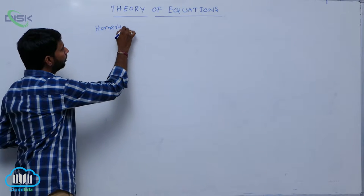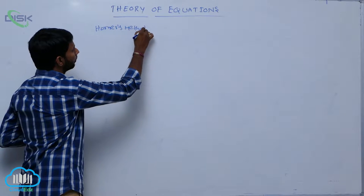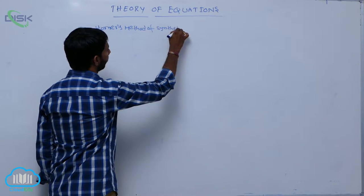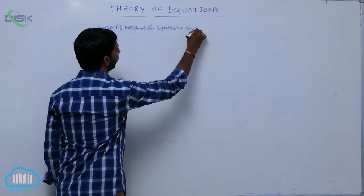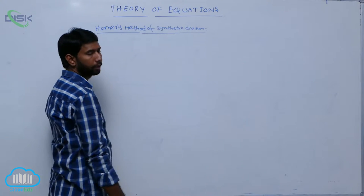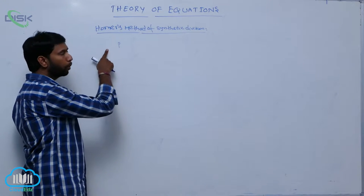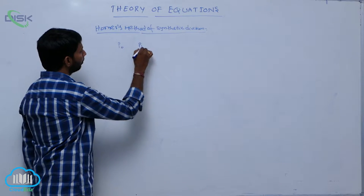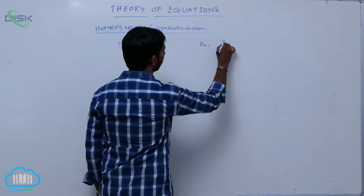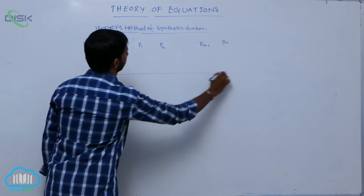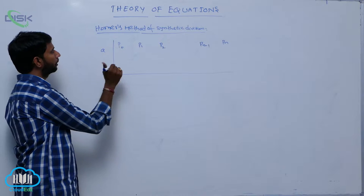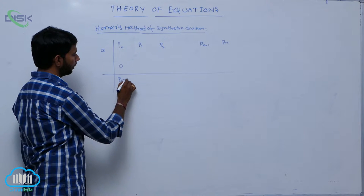Horner's method of synthetic division. Write the coefficients of a polynomial p₀, p₁, p₂, and so on, pₙ₋₁ and pₙ on the left side. On the right side, place the selected number a, where a is equal to zero.